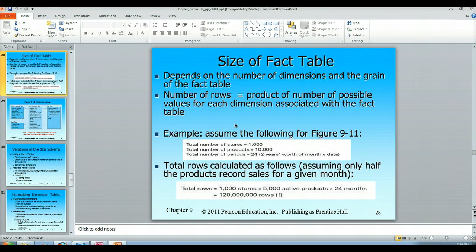120 million rows. If you add another dimension onto that, you multiply that out. So you can see that this could get very large very quickly.